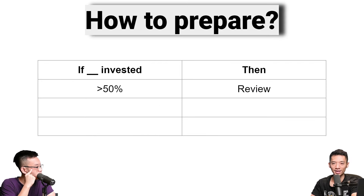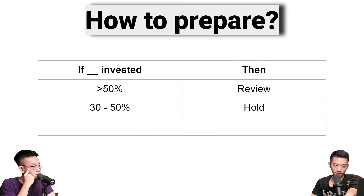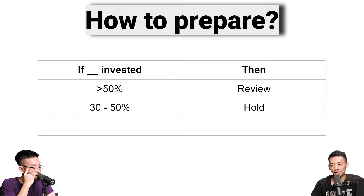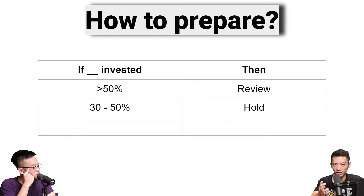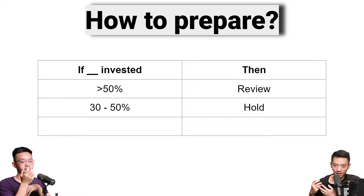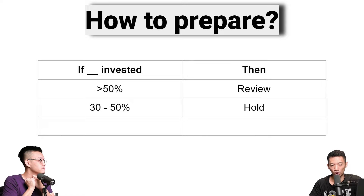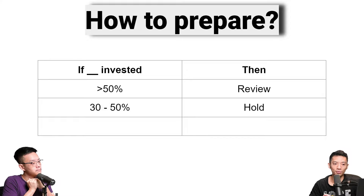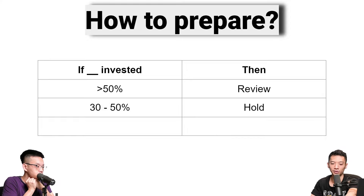But if the reverse is true, consider selling some of your holdings. If you are 30–50% invested, it's more of a 50-50 situation because you have enough gunpowder to withstand whatever happens. So if companies that you like are already on your watch list, that would be a good time to shop for them, especially when valuations are getting beaten down and you can get even cheaper prices than before.